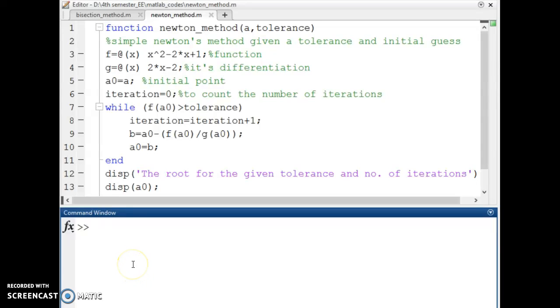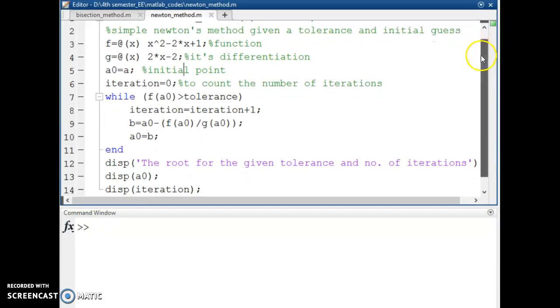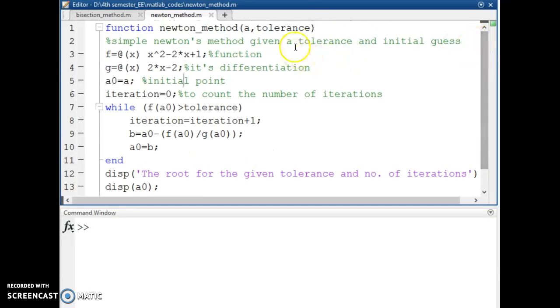So here we implement Newton's method for finding roots of an equation in MATLAB. In this example we have a particular tolerance level. If the value of the function is less than the tolerance level then the root is accepted, otherwise we proceed to the next iteration.